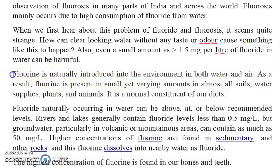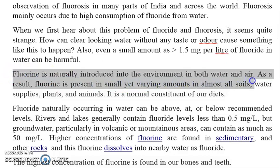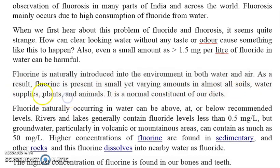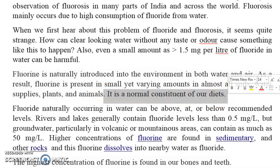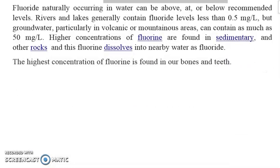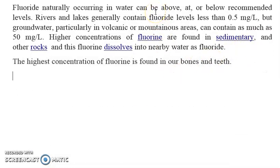Fluorine is naturally introduced into the environment in both water and air. As a result, fluorine is present in small but varying amounts in almost all soils, water supplies, plants, and animals — it is a normal constituent of our diet. This fluoride naturally occurring in water can be within, above, or below the limit. The amount of fluoride present in water depends upon the geological formation in that area where the bore water or groundwater is located.